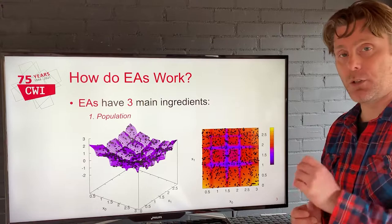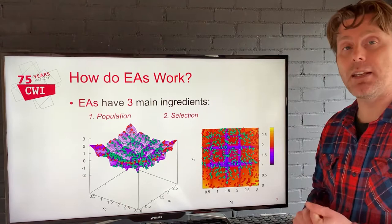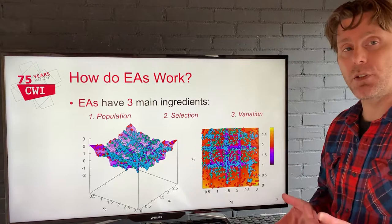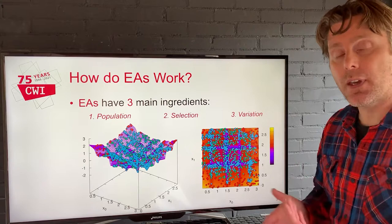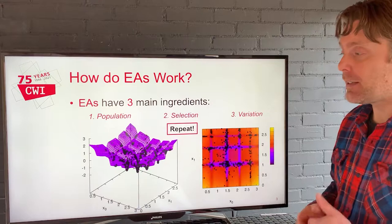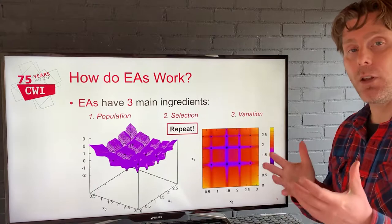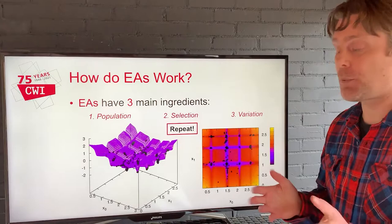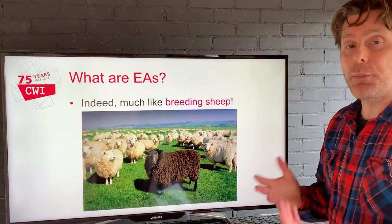An evolutionary algorithm has three main ingredients. First, it has a population — not a single search point — so it spreads many points in the search space. Then it has a means of doing selection, meaning you can discard solutions that are not so good and select those that are above average or better. And then a means of doing variation: taking those better solutions and turning them into even better solutions by combining them, reusing their advantageous traits and improving on them. And then we repeat. This is actually a multimodal evolutionary algorithm running here on the screen right now, capable of finding all local optima in the search space in a single run, by virtue of using a population and spreading it over the search space.